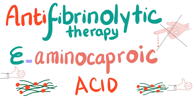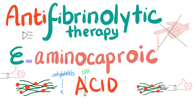Anti-fibrinolytic therapy. In the previous video in this playlist about bleeding and coagulation disorders, we talked about tranexamic acid. If you understood the previous video, this one is going to be a piece of cake. We have anti-platelets such as aspirin and clopidogrel, and fibrinolytic therapy such as TPA. What's the antidote for aspirin? It doesn't exist. What's the antidote to TPA? Tranexamic acid and aminocaproic acid.